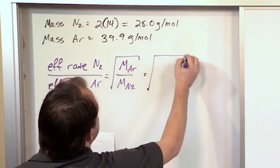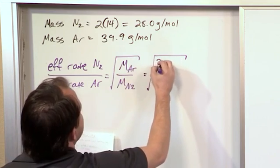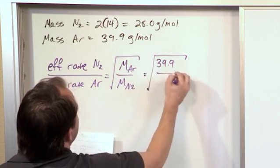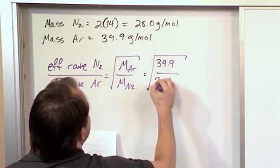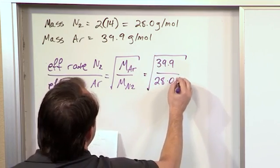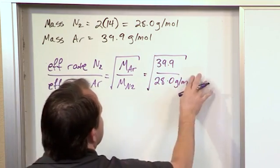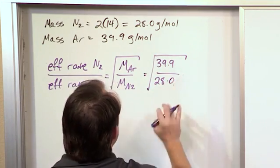So, it's the square root, and if you look this guy up, we already wrote down that it's 39.9 grams per mole, and this guy we already calculated 28.0 grams per mole. Well, we don't have to write the units necessarily, so we'll just leave it like that.